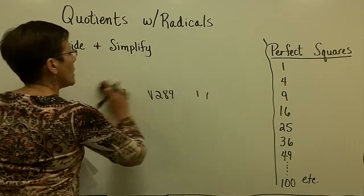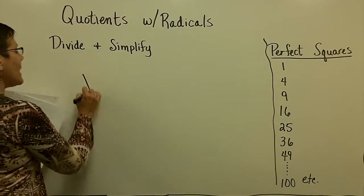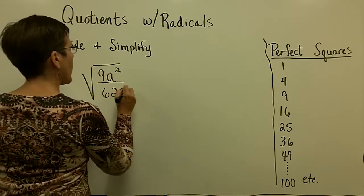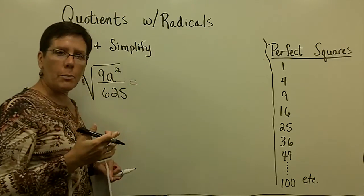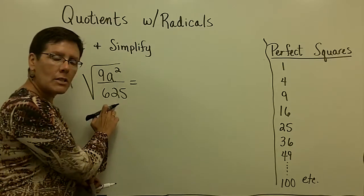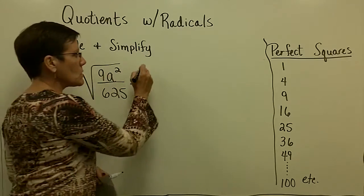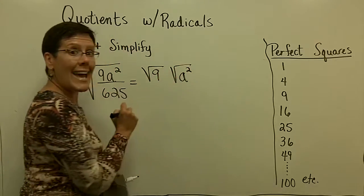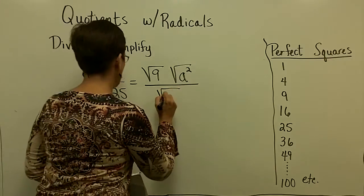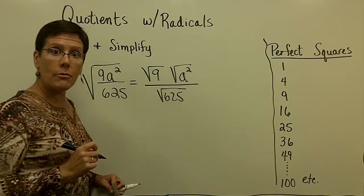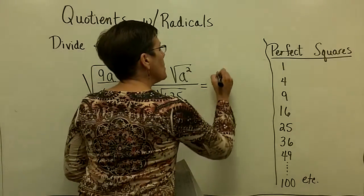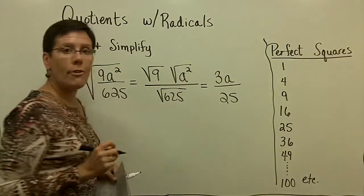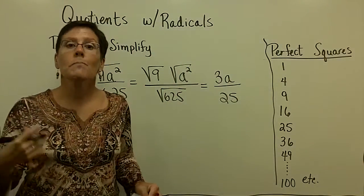Another one. Again, the radicand is a fraction. So here's 9a squared over 625. So all of these are perfect squares. That one you may not recognize. But because that one's a perfect square and that one's a perfect square, because you know the square root of 9 is 3, and you know the square root of a squared is a, then maybe you should just get your calculator out and just kind of find out if by chance that's a perfect square. And it is. It's equal to 25. So in the numerator, I have a 3 times an a. In the denominator, I have a 25. The 3 and the 25 cannot be reduced. And so I'm all done.